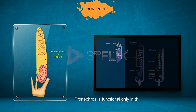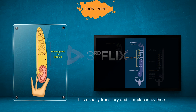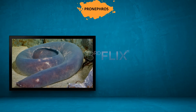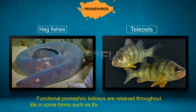Pronephros is functional only in the embryonic or larval stages. It is usually transitory and is replaced by the mesonephros. However, functional pronephric kidneys are retained throughout life in some forms, such as the hagfishes and a few teleosts.